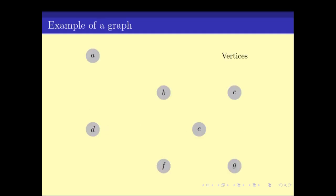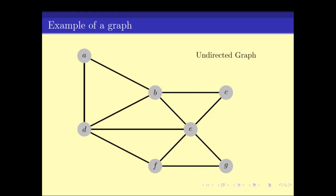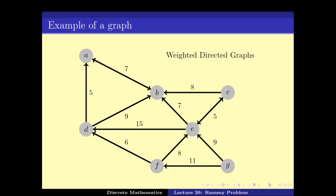Pictorially, vertices are drawn as points labeled a, b, c, d, e, f, g, and edges are drawn as lines between the two vertices. So here the edges include a-b, b-d, b-c, and so on. There is no edge between a and c, meaning a and c are not related. If I have an edge from u to v, we say v is a neighbour of u, and in an undirected graph the number of neighbours a vertex has is called its degree.